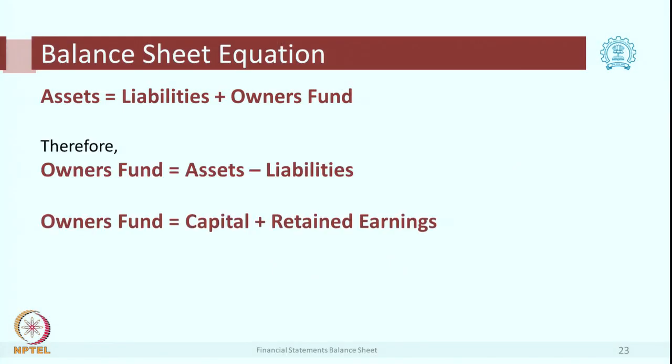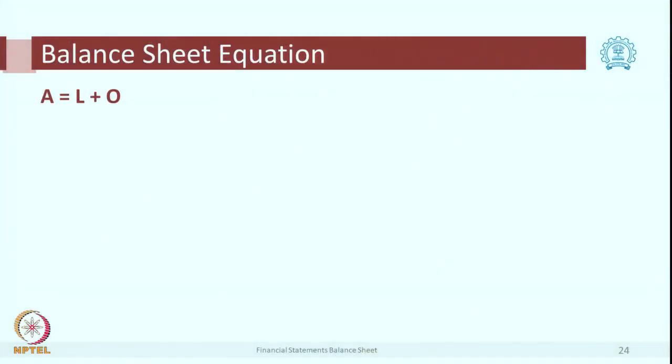Let us go into the balance sheet equation. As you know, the balance sheet is required to tally — total of assets equals external liabilities plus owner's fund, i.e., A = L + O. Owner's fund itself is capital plus retained earnings or reserves. We will take 5 simple transactions and understand the impact on A, L, and O for each.